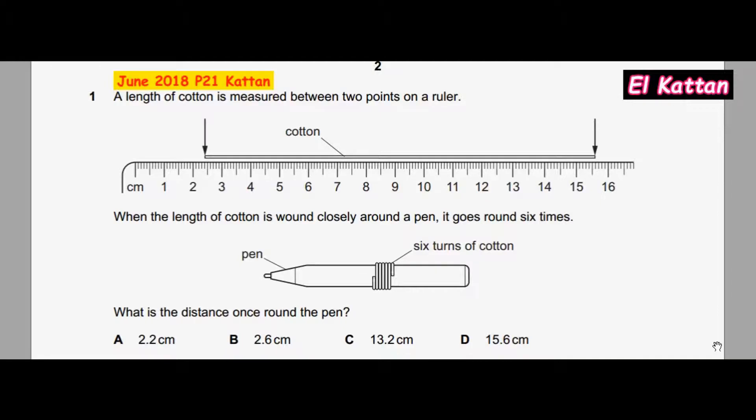When the length of cotton is wound closely around a pen, it goes around six times. What is the distance once around the pen?